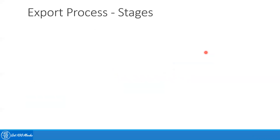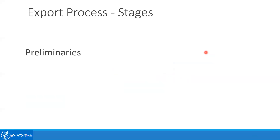As summarized in the previous video, the first step is the preliminaries phase. What you need is what we call an IEC number, which is an Importer Exporter Code number. This is like an identification number and a certification number.